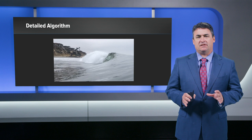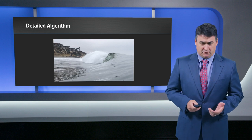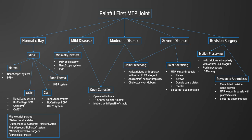Now we're going to talk specifically about the detailed algorithm we've come up with. It's a busy slide, but we can break it down into sequential slides. The first will cover normal x-rays, then mild disease, moderate disease, severe disease, and we'll also have a slide devoted to revision surgery.